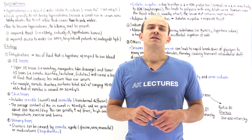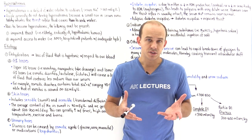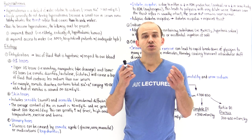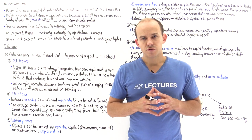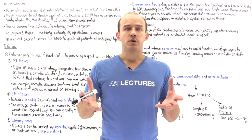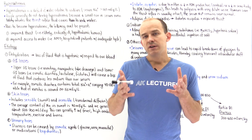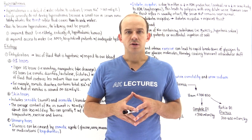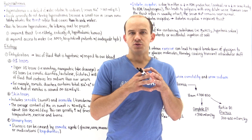The next topic we're going to talk about is electrolyte disturbances, and the first electrolyte I'd like to focus on is sodium. The normal concentration of sodium in our blood is anywhere between 135 to 145 milliequivalents per liter. If we go above 145 milliequivalents per liter, this is said to be hypernatremic.